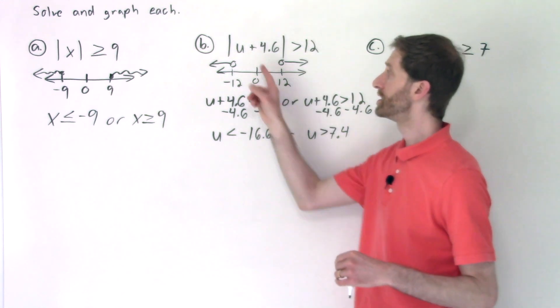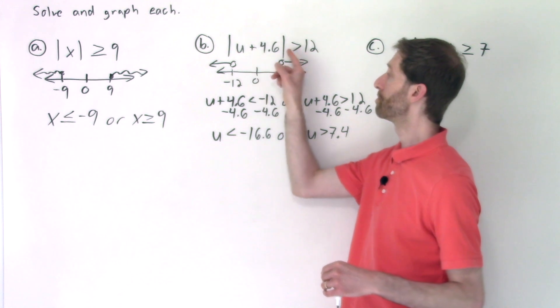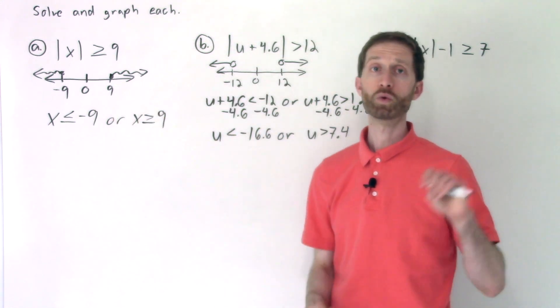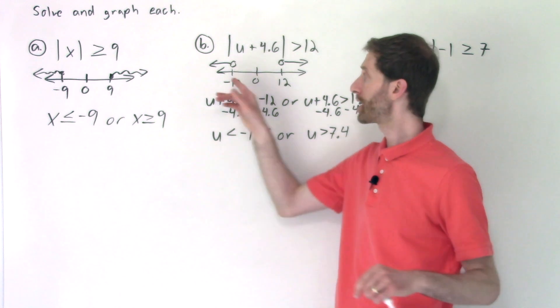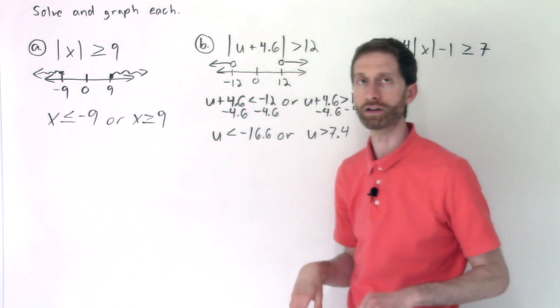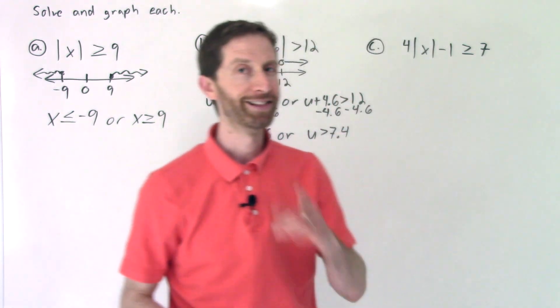So again, the key here is the distance that this is from zero is more than 12. That's 12 to the left, 12 to the right and beyond them. And once we have the graph, we translate into inequalities. Nice. Last problem.